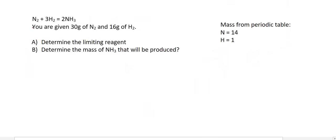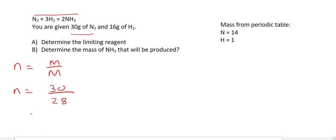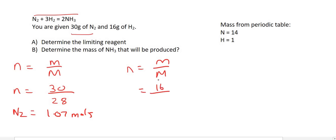Next question uses the same reaction but different starting amounts. Moles of N₂: 30 divided by its molar mass of 28, giving 1.07 moles. Then for hydrogen: 16 divided by its molar mass of 2, giving 8 moles.